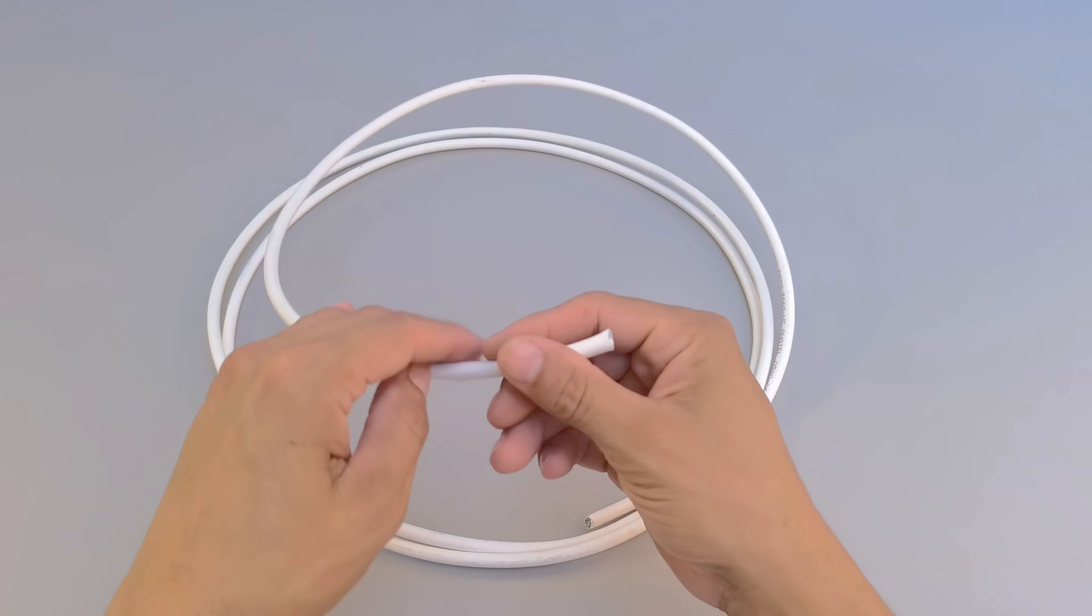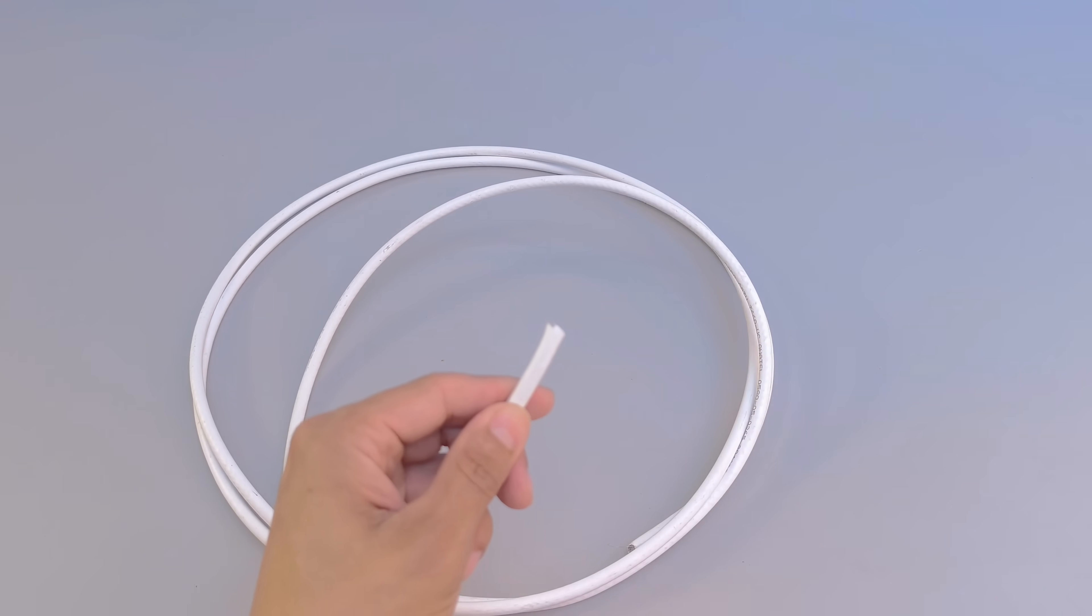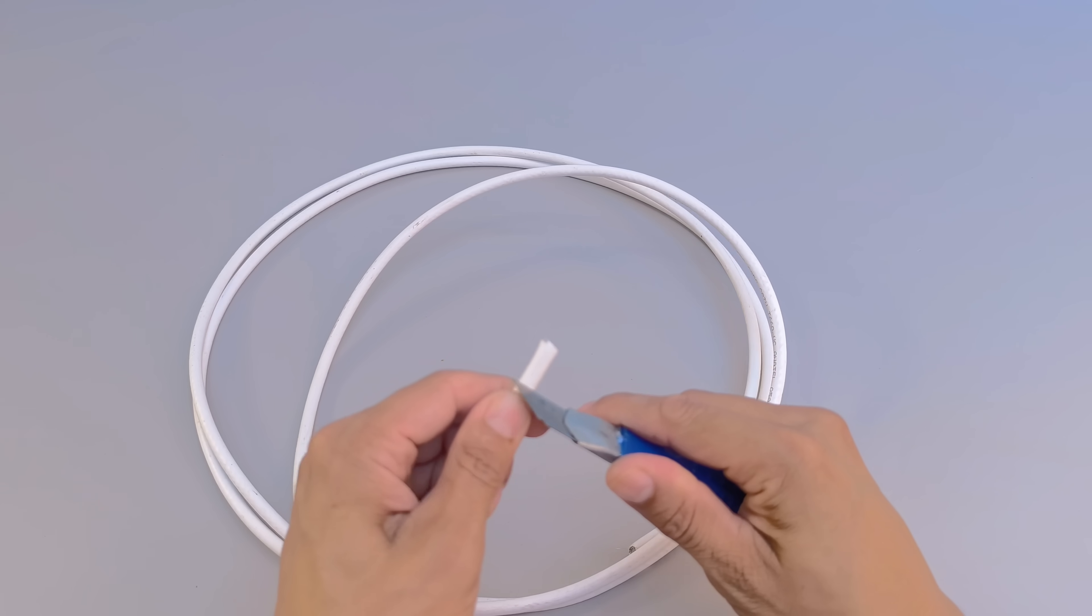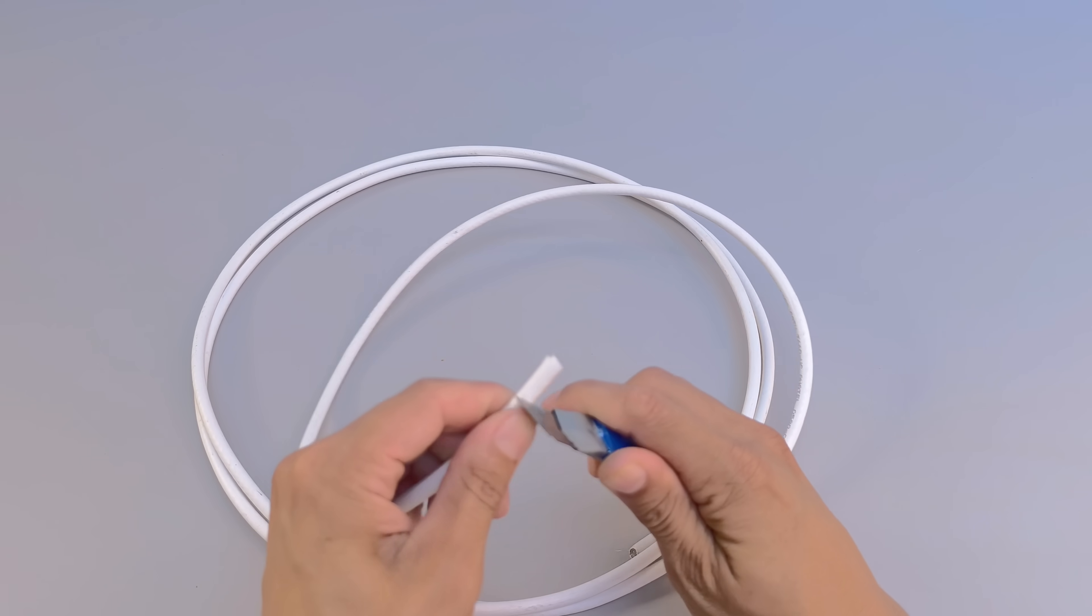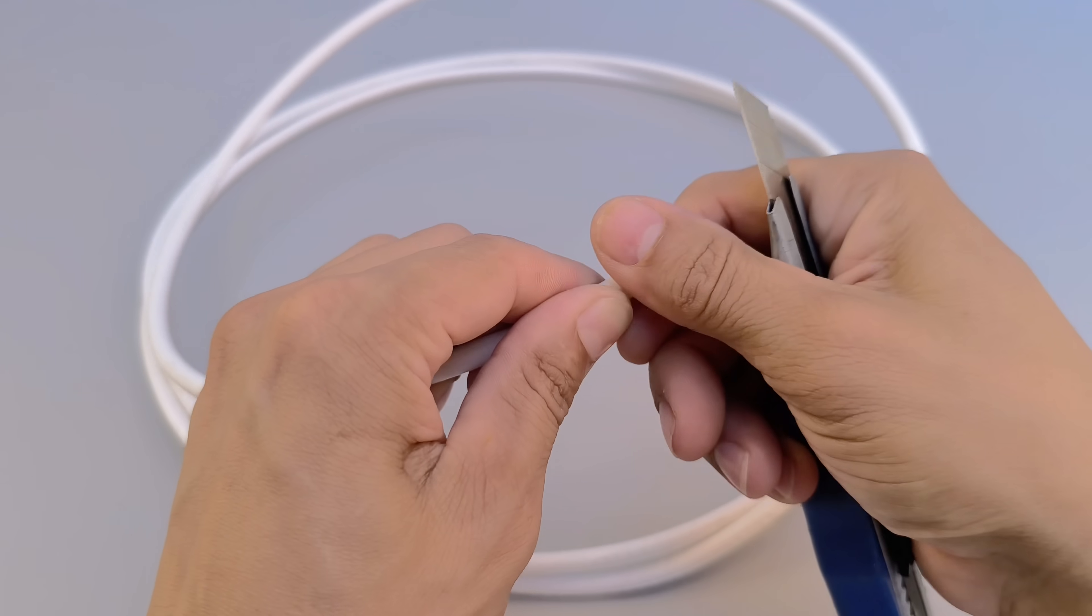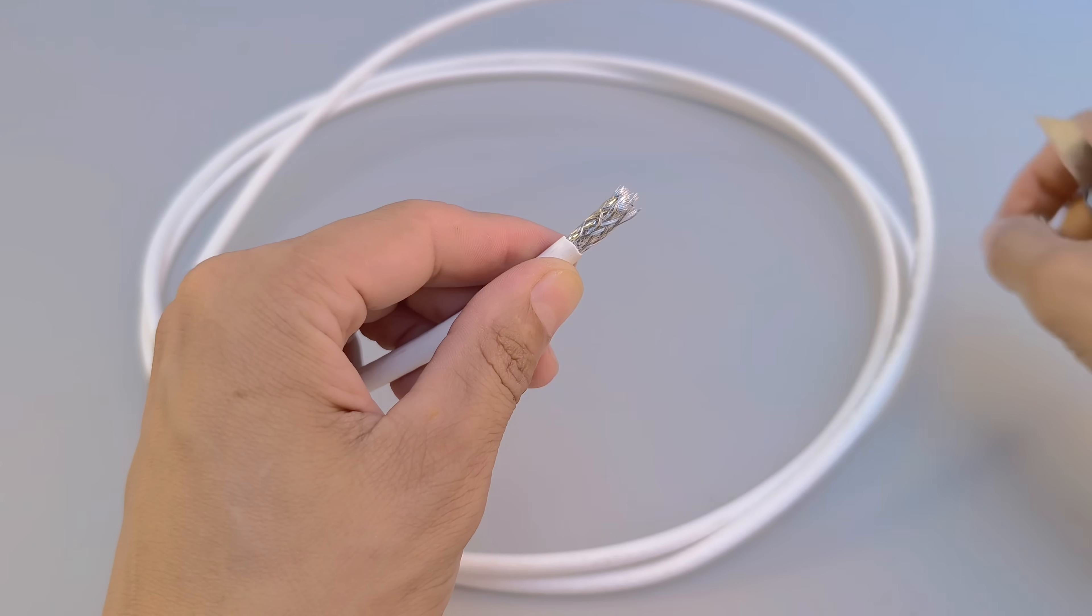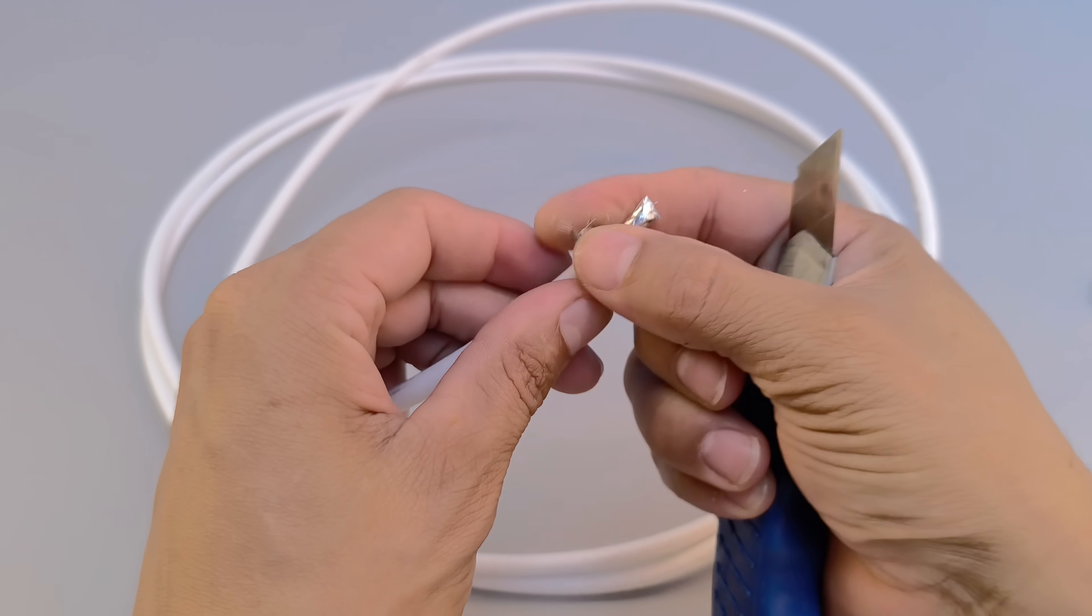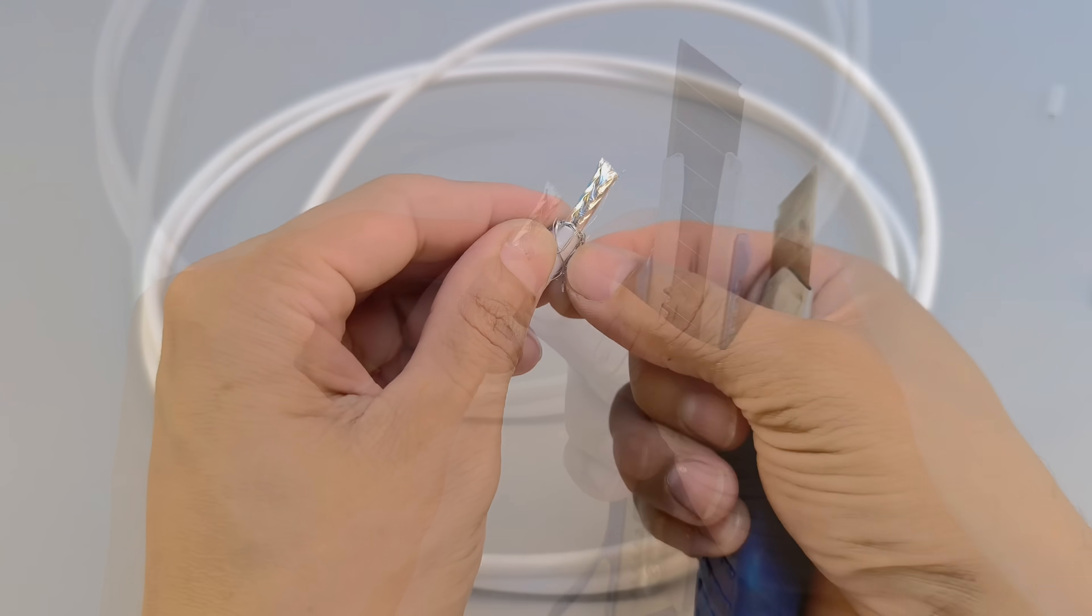It's time to prepare the coaxial cable, which is responsible for carrying the signal from the antenna to the television. Set aside a cable of approximately 2 meters, enough to ensure mobility and practicality during installation. Using an appropriate cutting tool, carefully remove the outer layer of the cable at both ends.